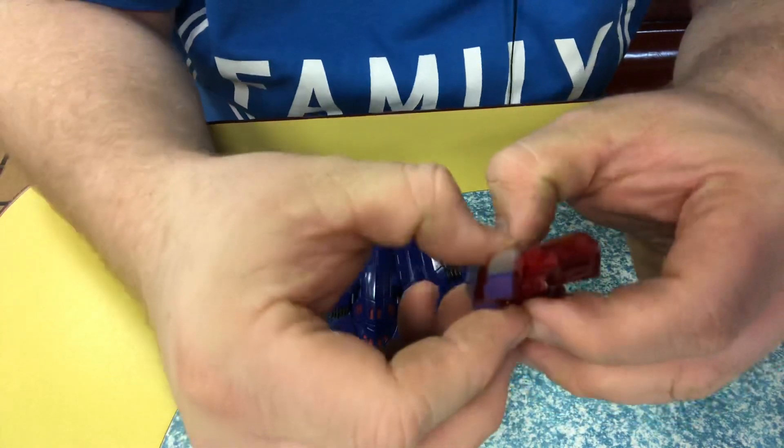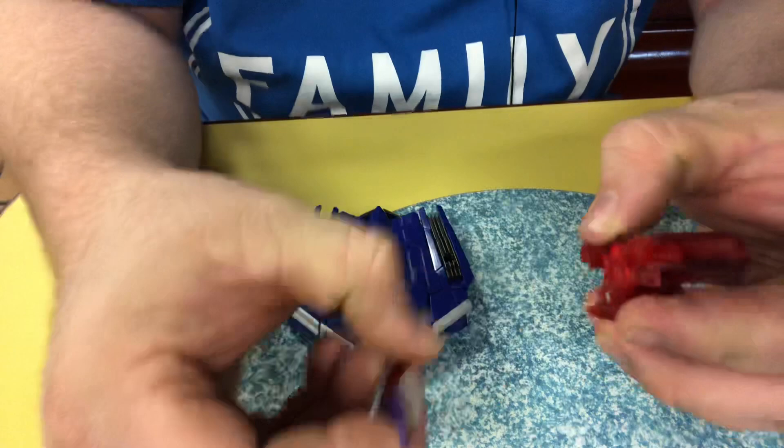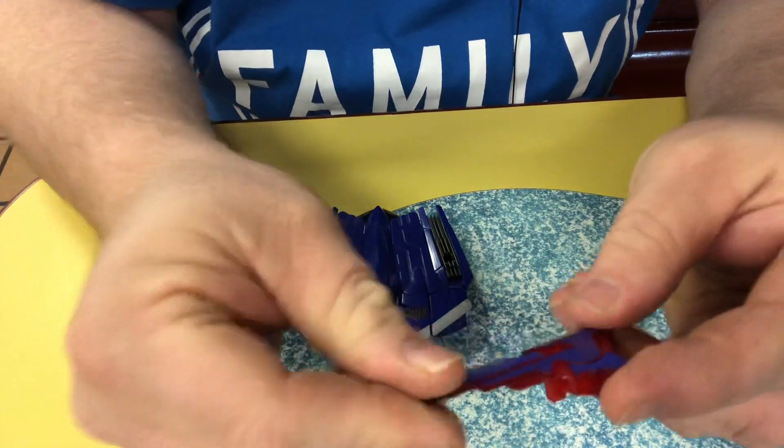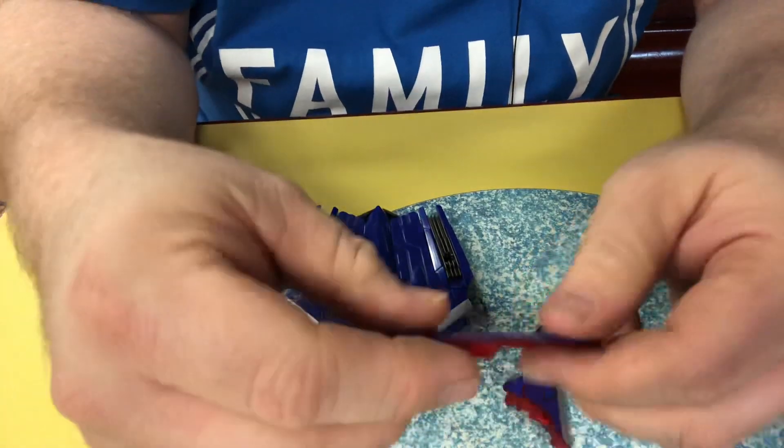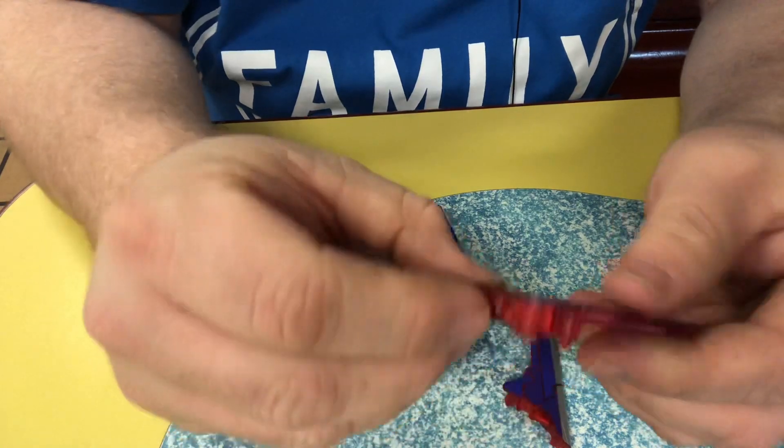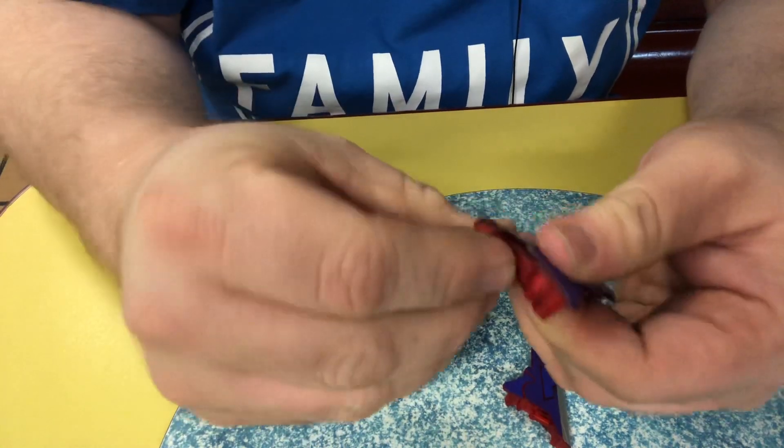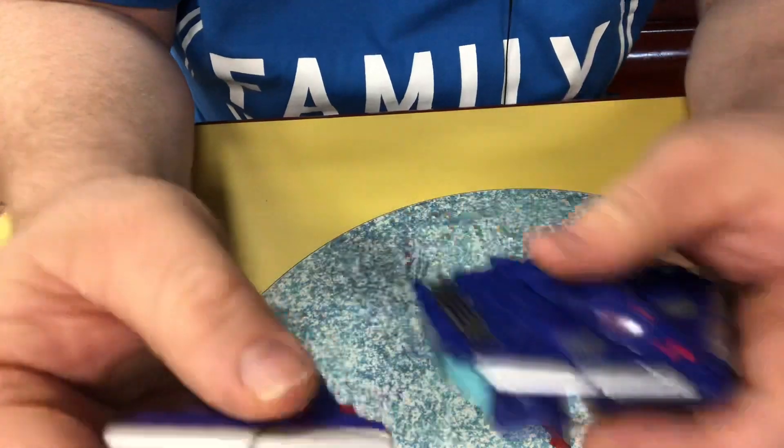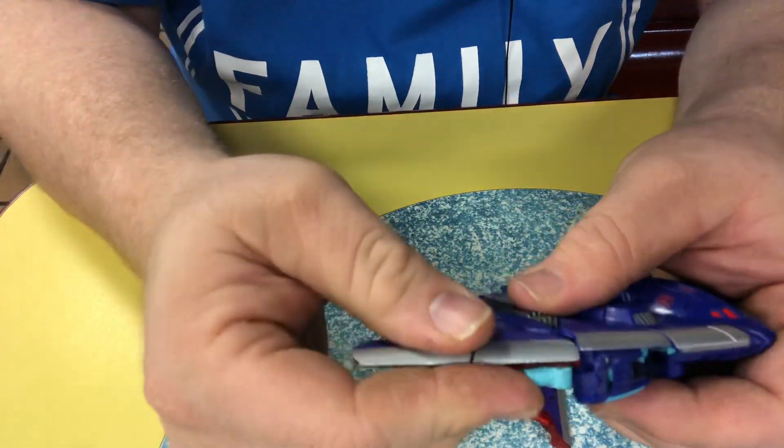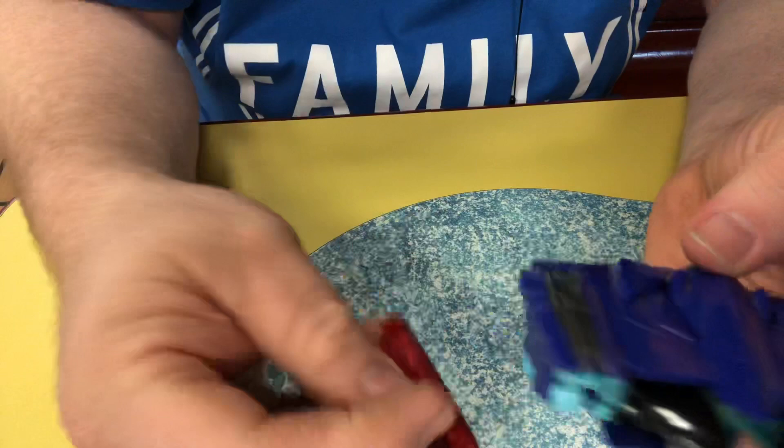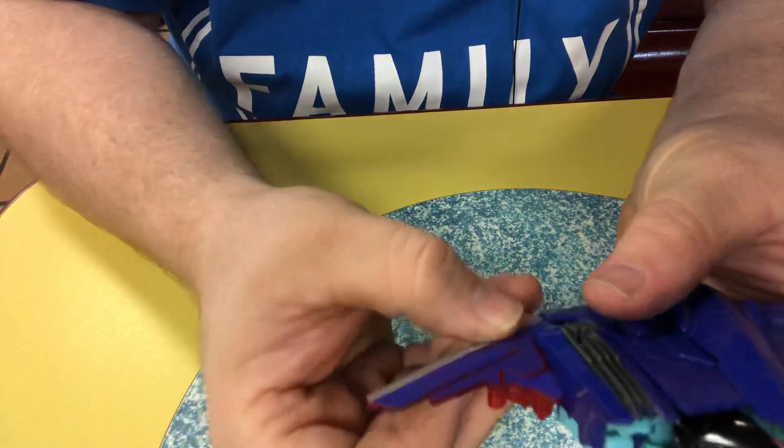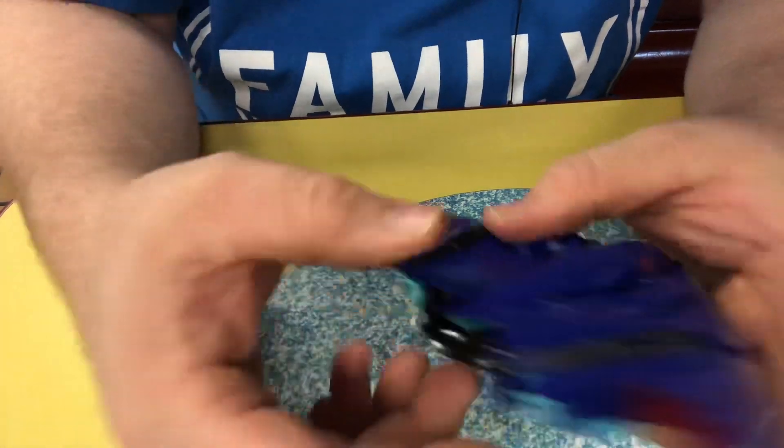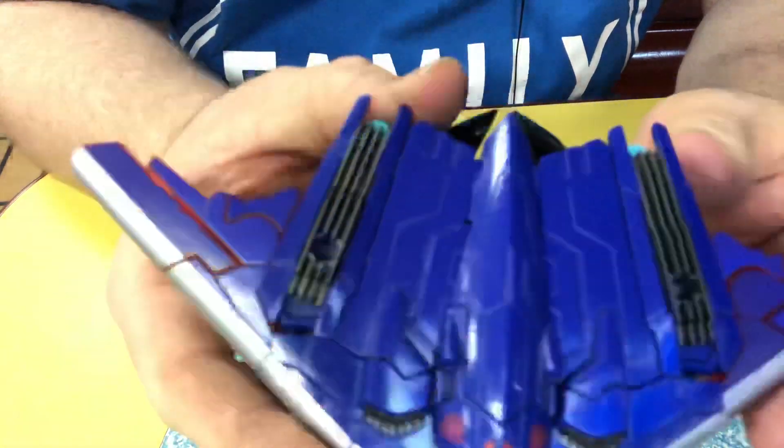Then you come back to this, separate it, fold it right back in, pull that in, and this piece pegs in here, and that piece pegs in right there. Then you have a stealth bomber.